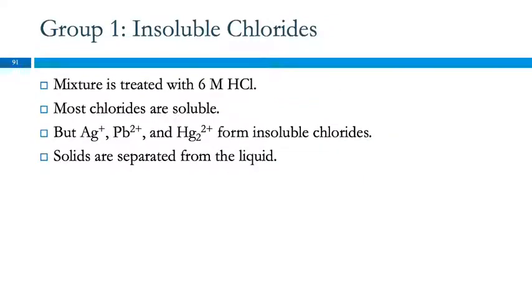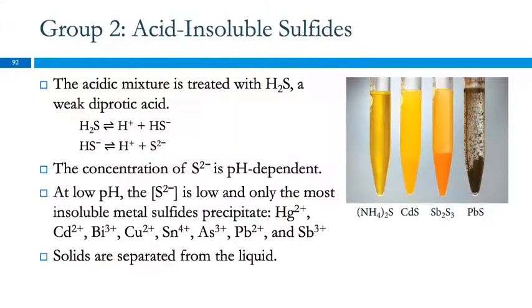Looking at these groups separately, most chloride compounds are soluble, but these guys are not soluble. And so we can separate those. And then we make the mixture acidic and treat it with H2S. The sulfide ion concentration is going to be dependent on the pH. At low pH, where you've got lots of hydrogen ions, you're going to have a low amount of sulfide and only the most insoluble ones will precipitate. And then you can separate those.